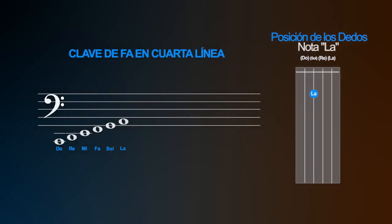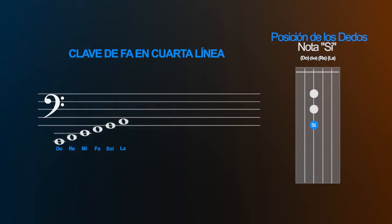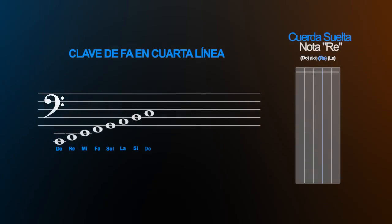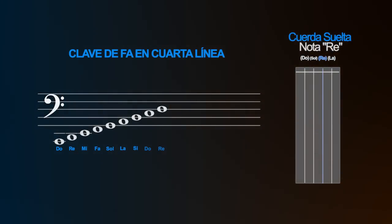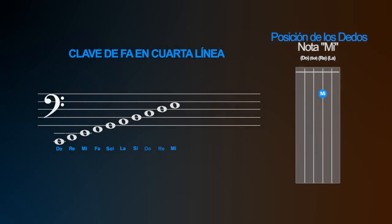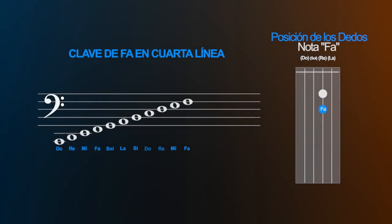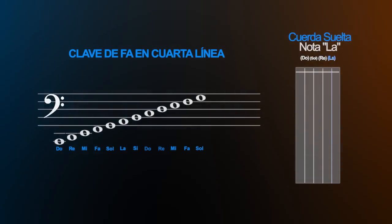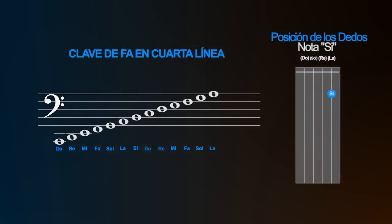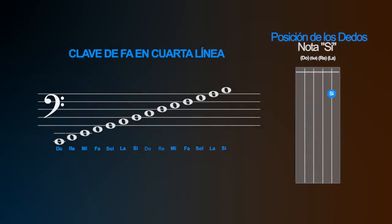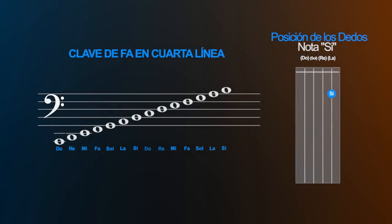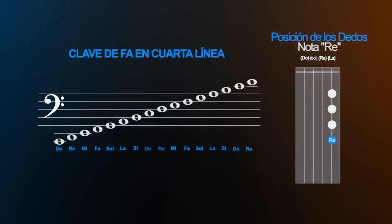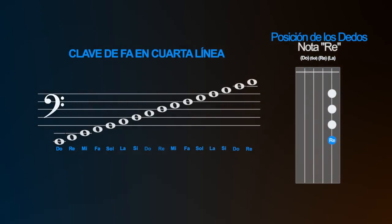Luego tenemos La, que está en el primer espacio del pentagrama. Si, que está en la segunda línea del pentagrama. La suelta Si está arriba de la quinta línea, sería entre la quinta línea y la primera línea adicional hacia arriba. Luego tenemos Do, primera línea adicional. Re, que sería en el espacio de la primera y segunda línea adicional.